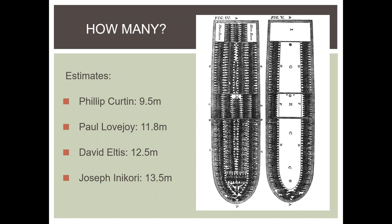A big question modern historians continue to debate is how many people were brought to the New World. Depending on the historian, you get different numbers: Philip Curtin puts the number around 10 million; Paul Lovejoy estimates closer to 12 million; and Joseph Inikori puts it at almost 14 million, with some estimates as high as 15 million. Either way, whether 10 or 15 million, that's a lot of people sold into slavery — and that's not counting the other 10 to 15 million who went into the Islamic slave trade. So we're potentially talking about 30 million or more people sold into slavery.